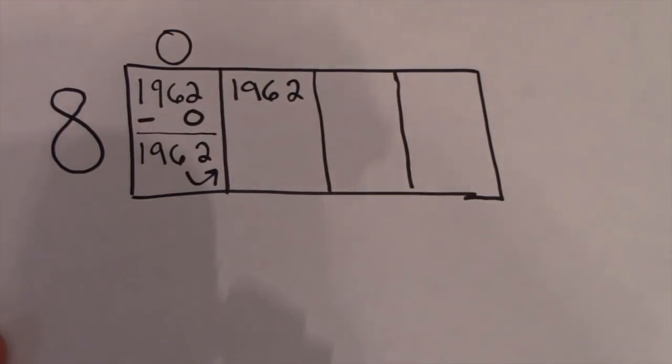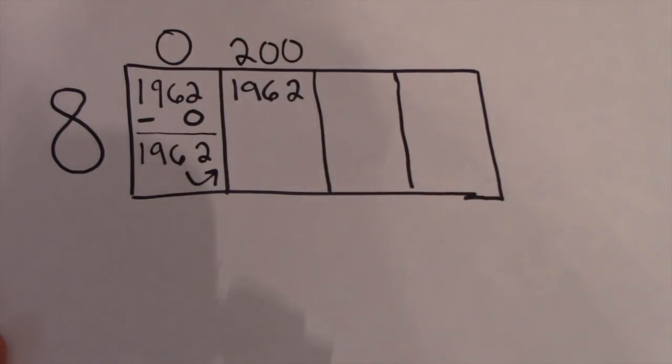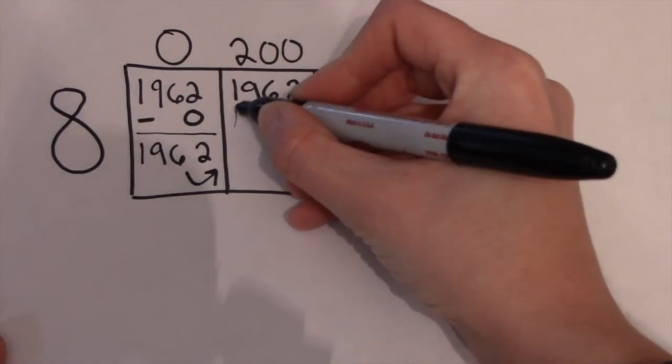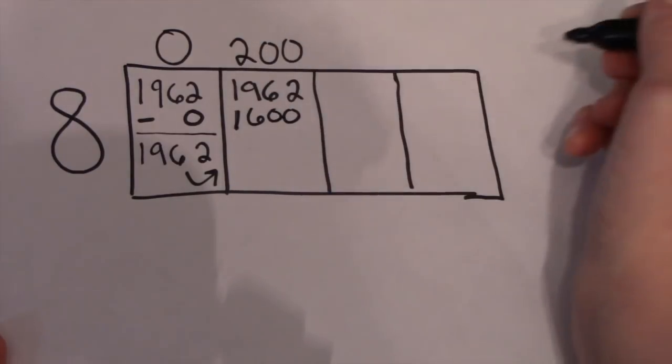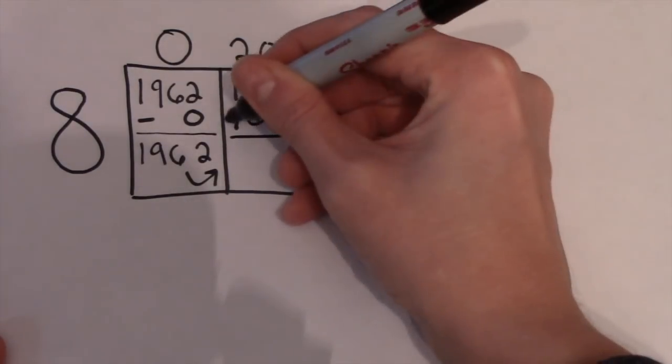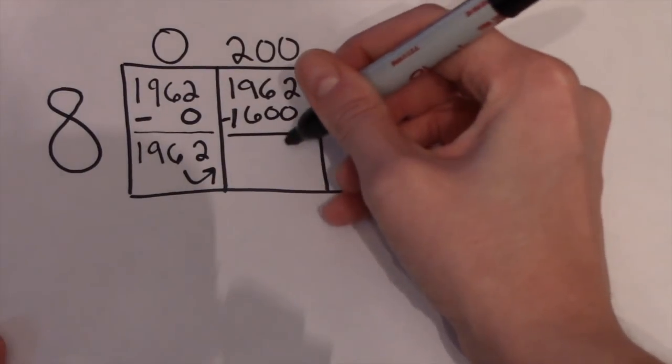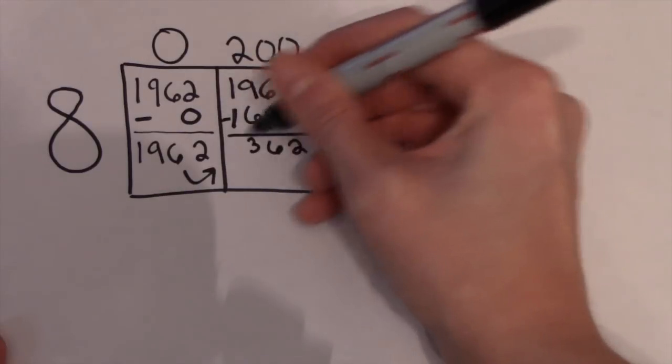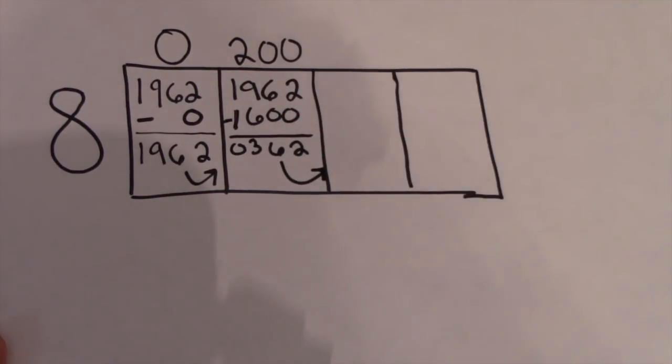1,600 is 8 times 200. Therefore, 200 goes on top. We're going to go ahead and subtract 1,600. And with some second grade subtraction mad skills, we are going to get 2 in the ones place, 6 in the tens place, 3 in the hundreds and 0 in the thousands. Transfer that and guess what? We're in the tens place.